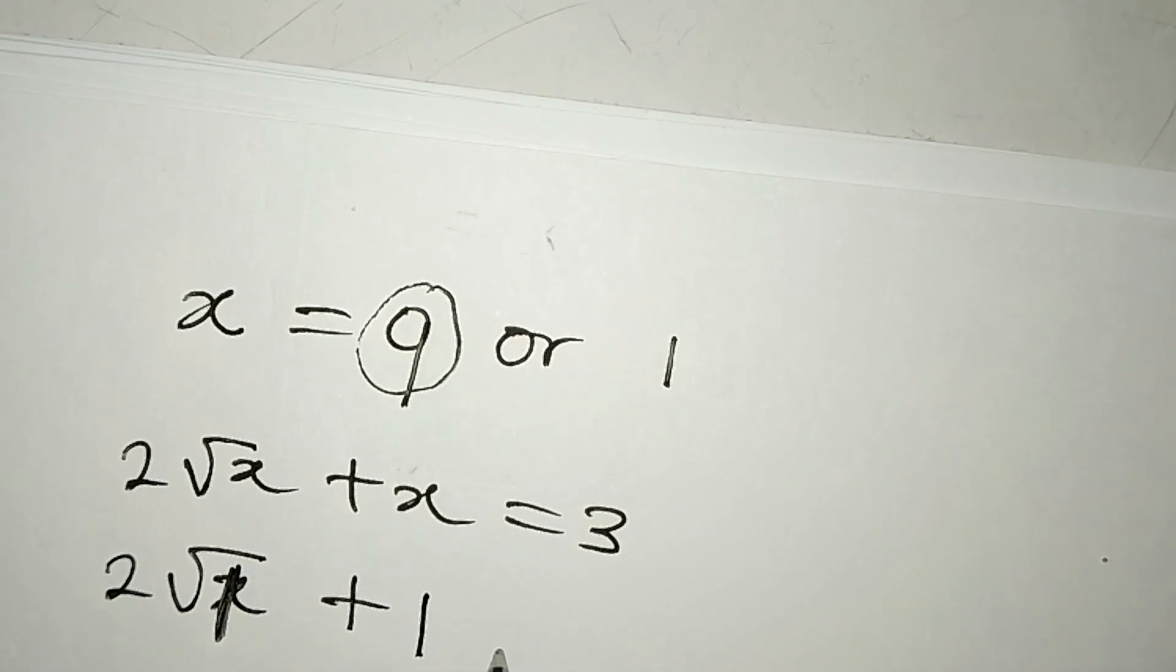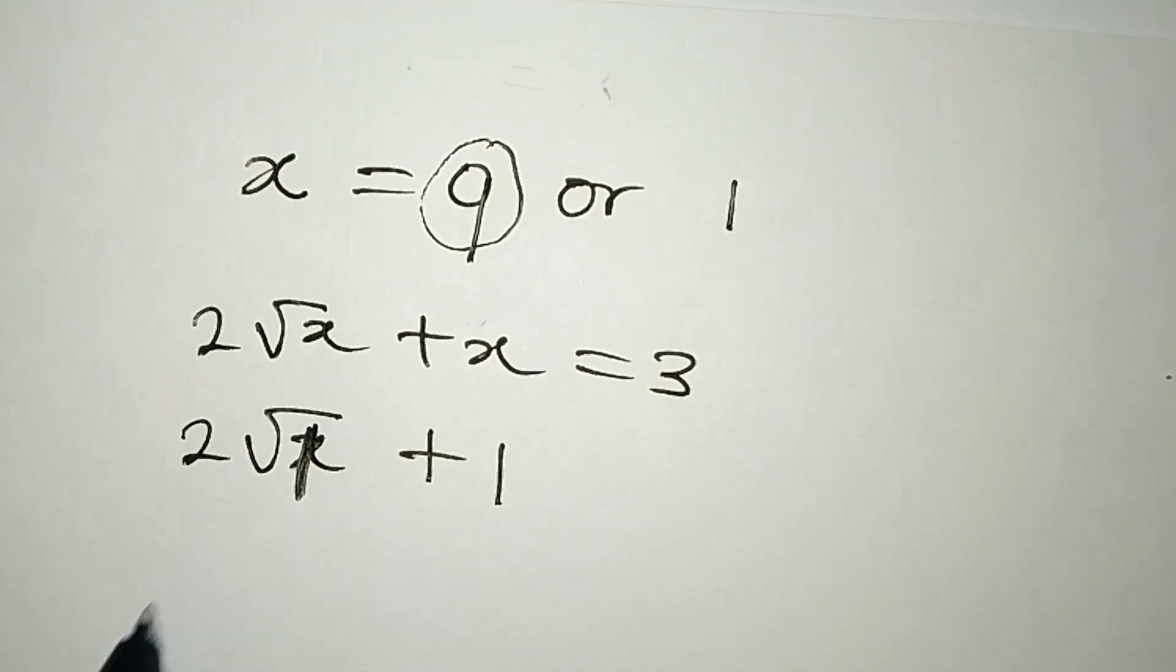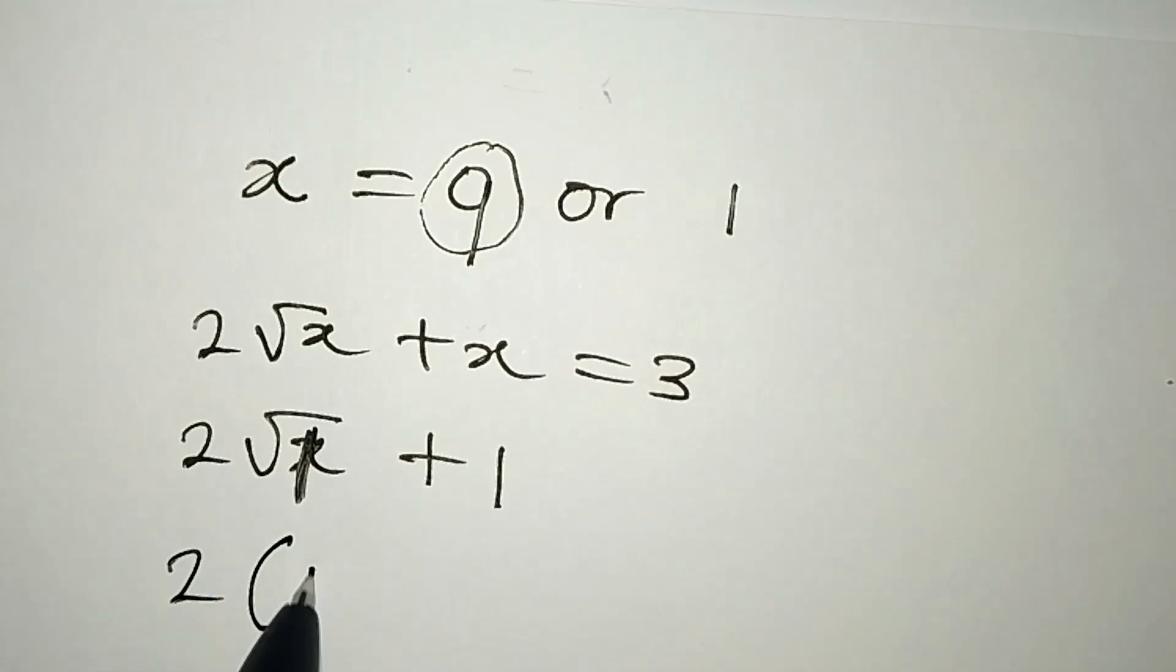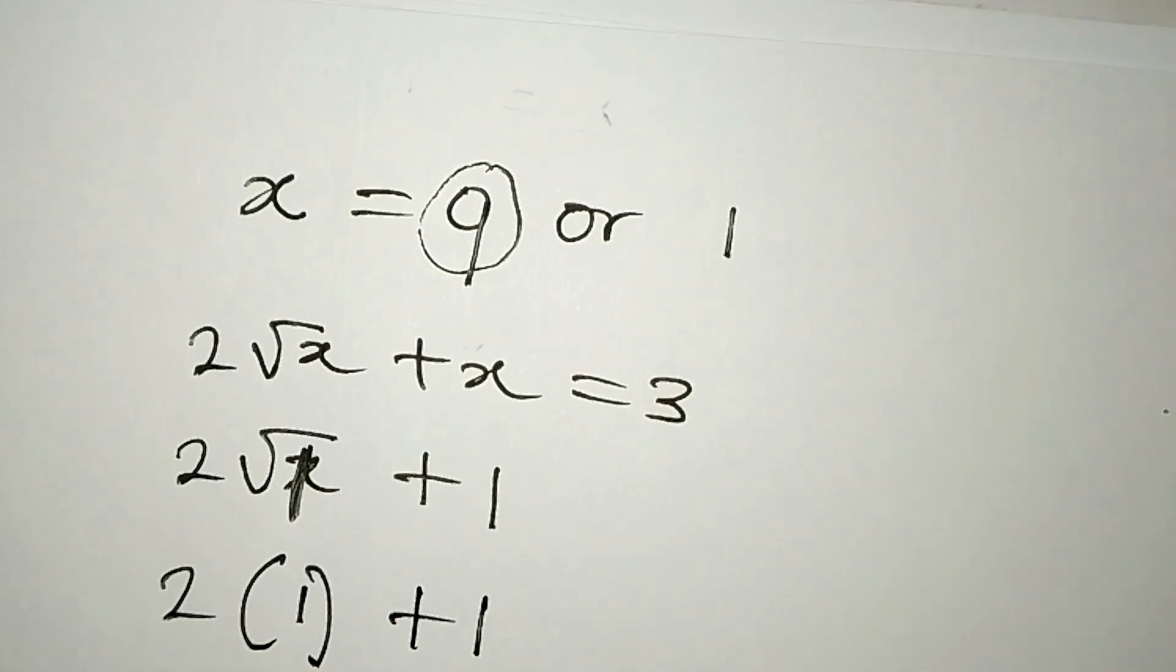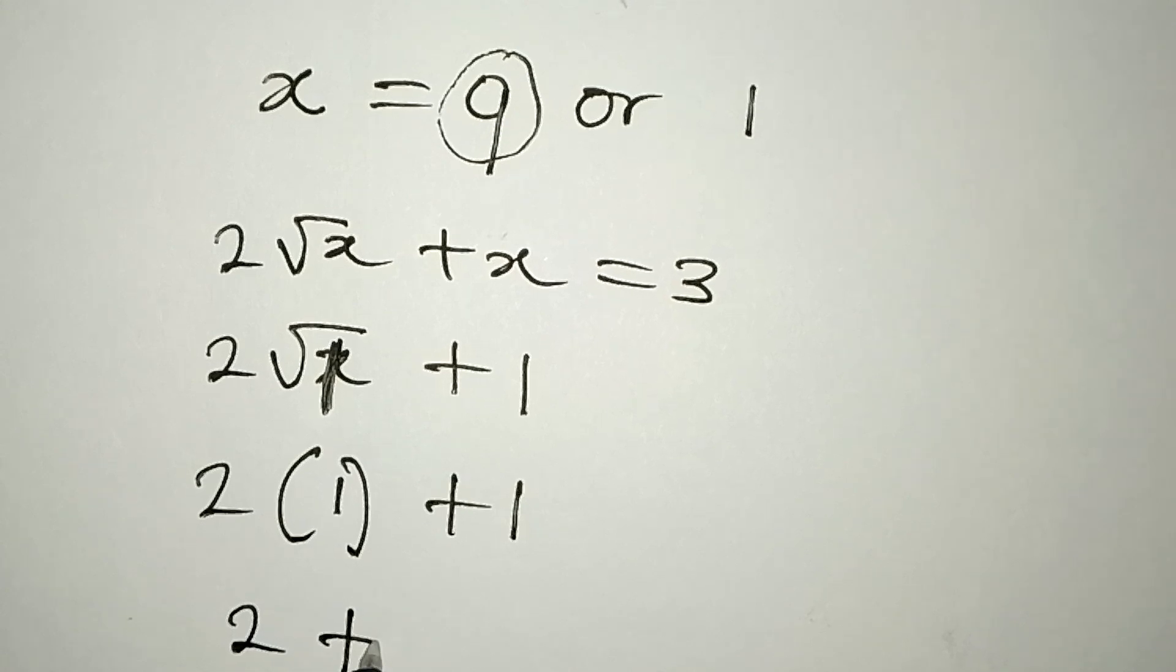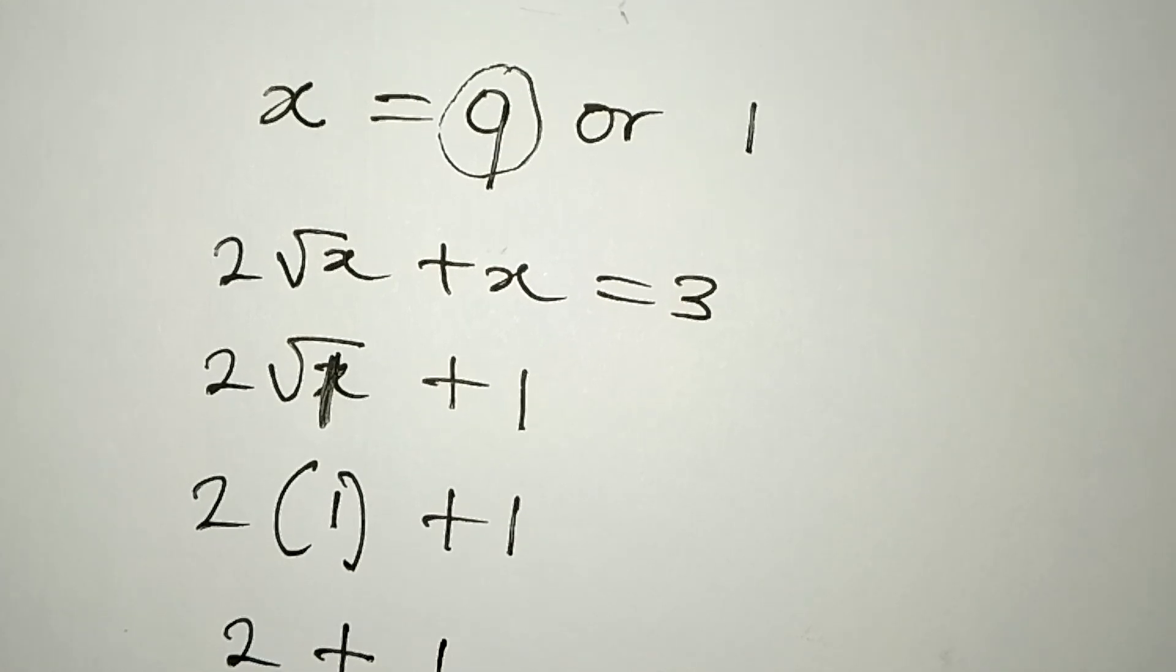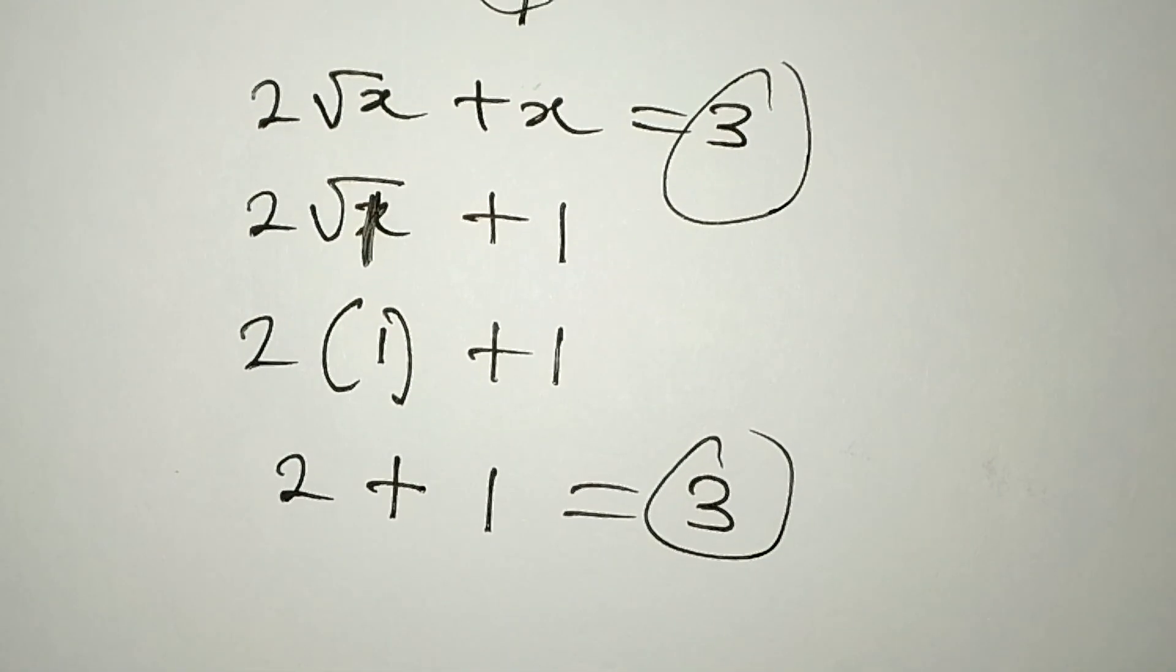√1 = 1, so we have 2 × 1 + 1 = 2 + 1 = 3. This gives us 3, which matches the right-hand side.